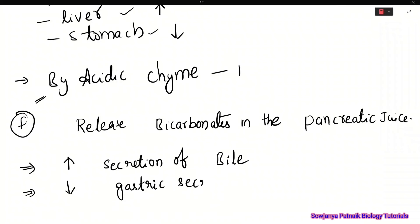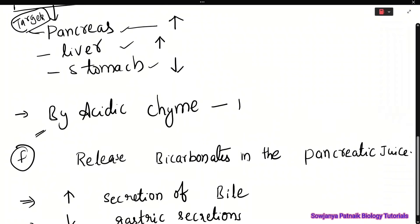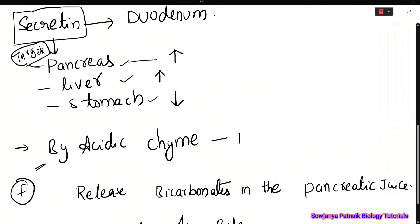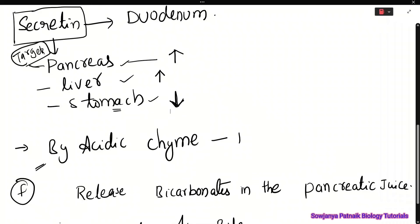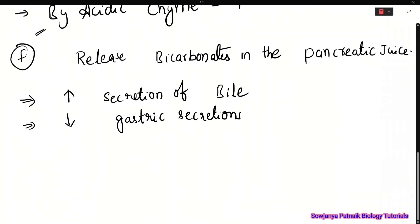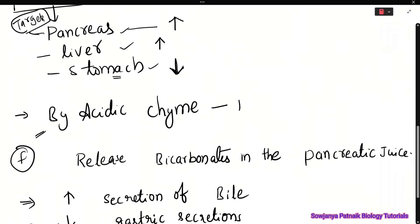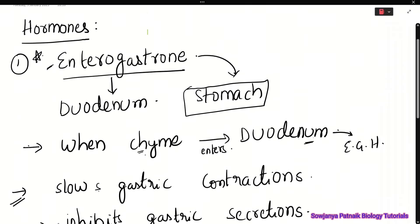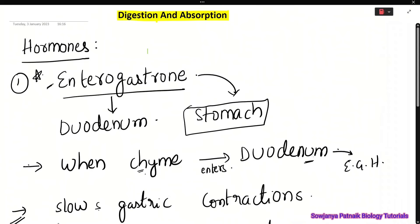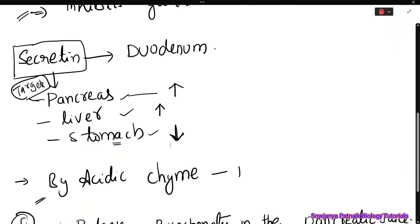Secretin also decreases gastric secretions — that is how it decreases the activity of the stomach. So the first hormone is enterogastron and the second hormone is secretin.